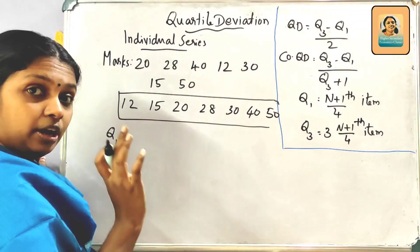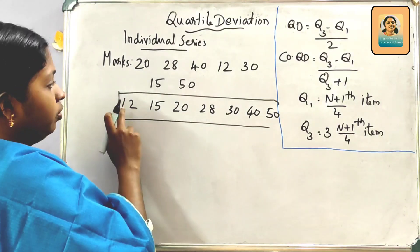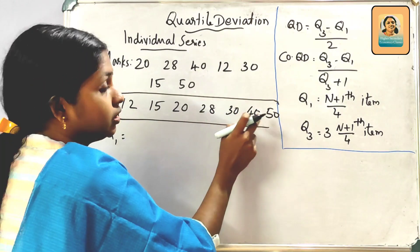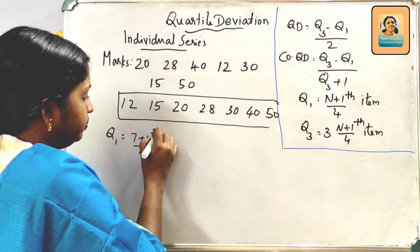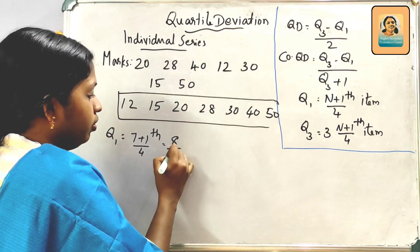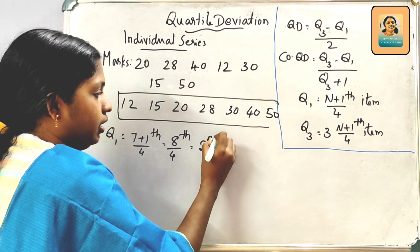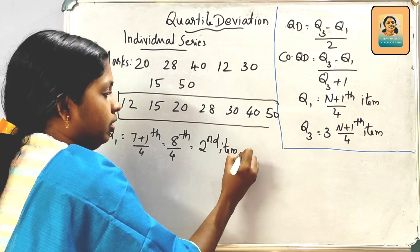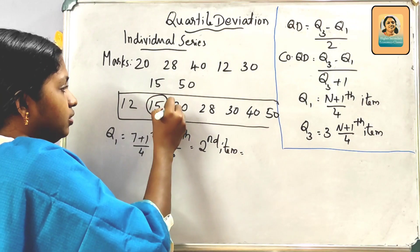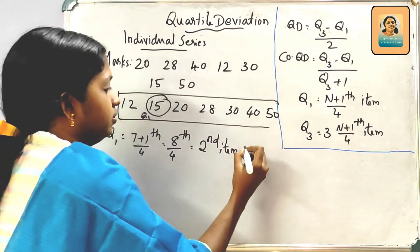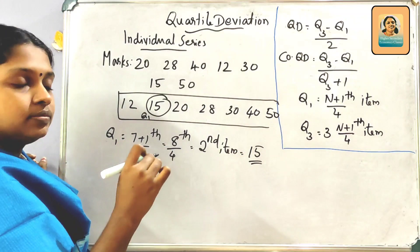Q1 is the (n+1)/4 th item. In individual series, n is the number of items: 1, 2, 3, 4, 5, 6, 7 — so n equals 7. Q1 = (7+1)/4 = 8/4 = 2nd item. In ascending order, the 2nd item is 20. So Q1 equals 20.